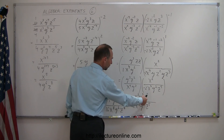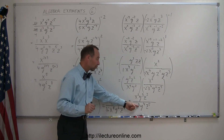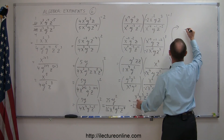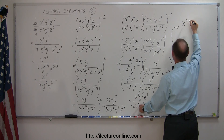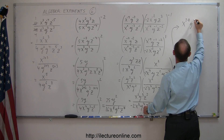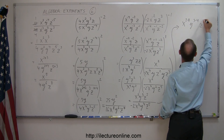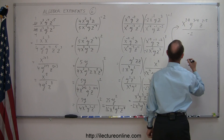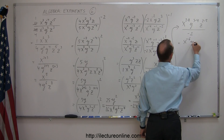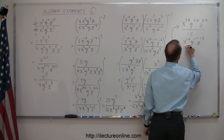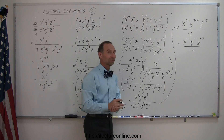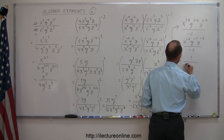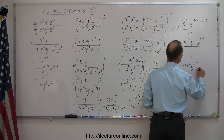Now we have x's, y's, and z's in both the numerator and denominator. The rule is when we divide, we subtract the exponents. So this becomes x to the 2 minus 8, y to the 3 minus 4, and z to the 2 minus 5, all divided by negative 2 in the denominator. This equals x⁻⁶, y⁻¹, z⁻³, all divided by minus 2. We end up with negative exponents again, so we bring those to the denominator and change them to positive exponents. This becomes 1 over negative 2 times x⁶, y, z³.